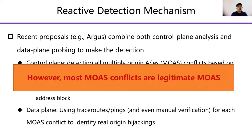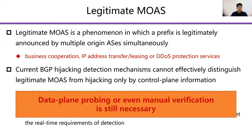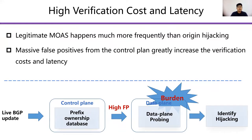However, most MOAS conflicts are legitimate MOAS. Legitimate MOAS is frequently caused by business cooperation, IP address transfer, or DDoS protection. Current BGP hijacking detection mechanisms cannot effectively distinguish legitimate MOAS from origin hijacking by control plane information alone. Therefore, data plane probing or even manual verification is still necessary. Since legitimate MOAS happens much more frequently than origin hijacking in reality, massive legitimate MOAS conflicts often consume considerable resources for data plane probing and manual verification, which significantly increases the verification cost and latency.